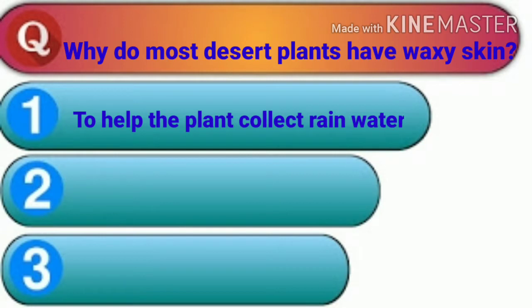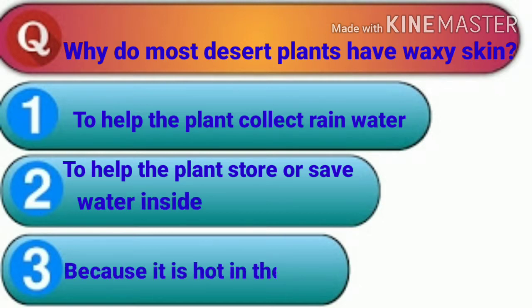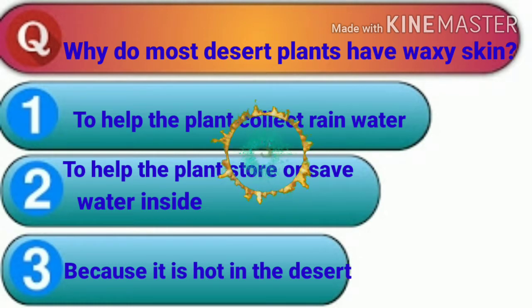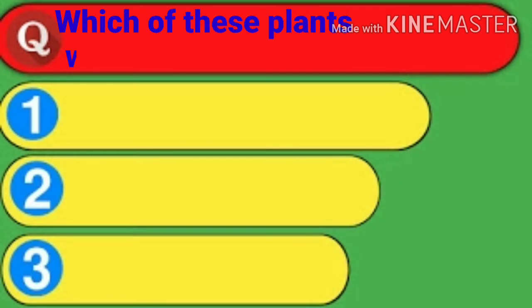Why do most desert plants have a waxy skin? First: to help the plant collect rain water. Second: to help the plant store or save water inside. Third: because it is hot in the desert. You have five seconds to try yourself. The answer is to help the plant store or save water inside.